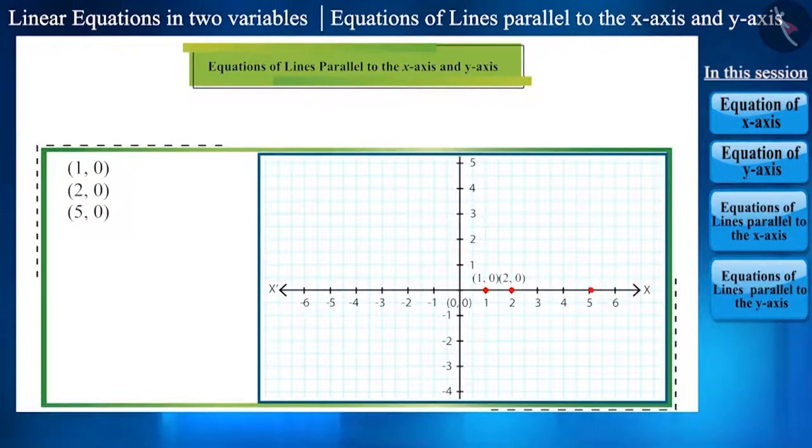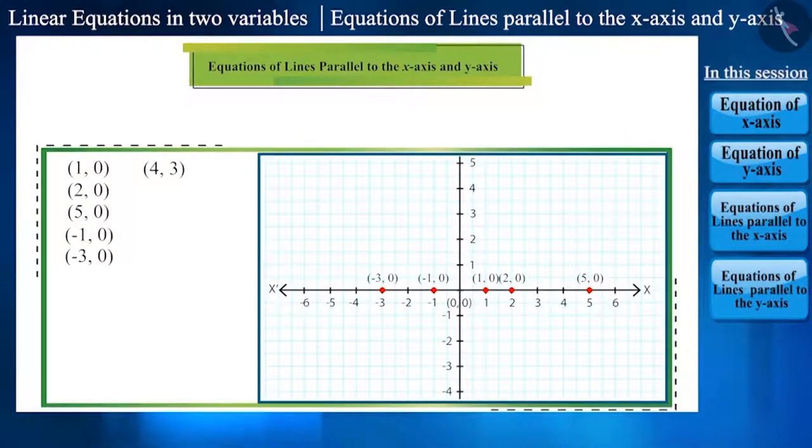Similarly, 5, 0, minus 1, 0, minus 3, 0 will all lie on the x-axis. Will point 4, 3 also lie on the x-axis? No. And what about minus 3 and 2? Even this point won't lie on the x-axis. Hence,